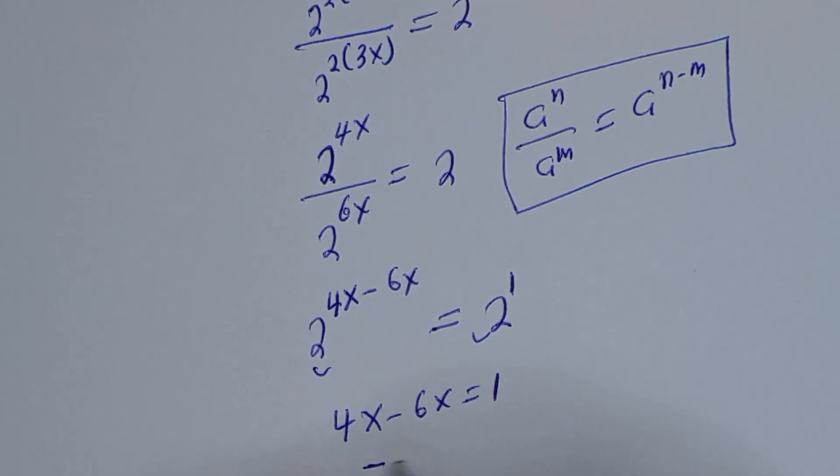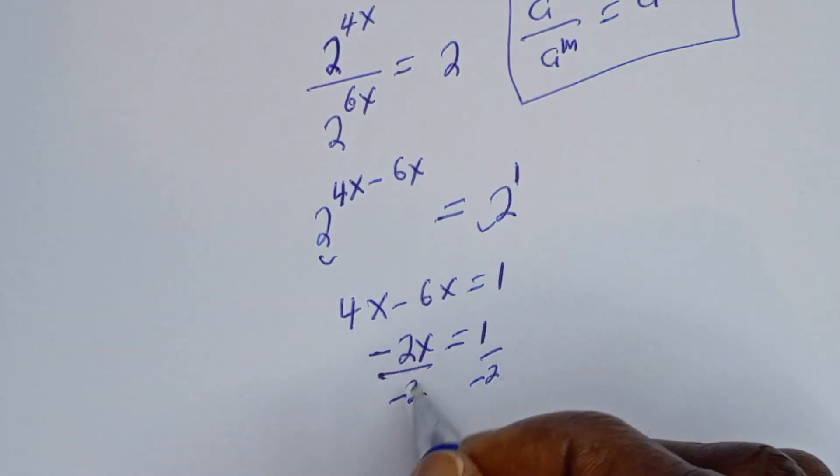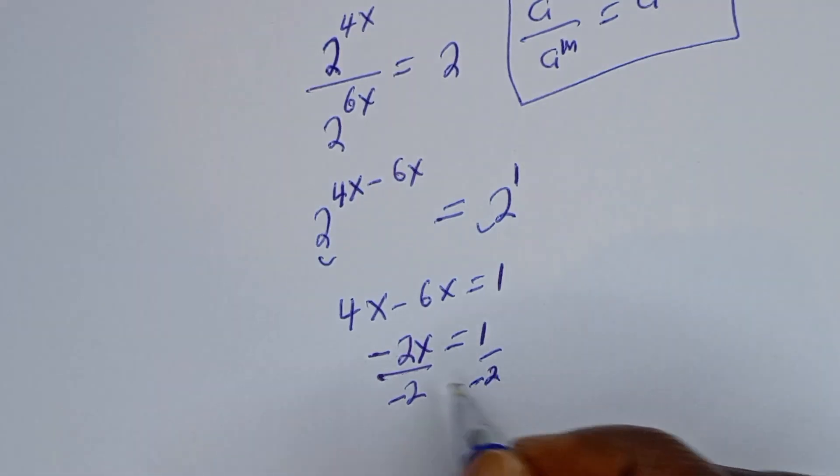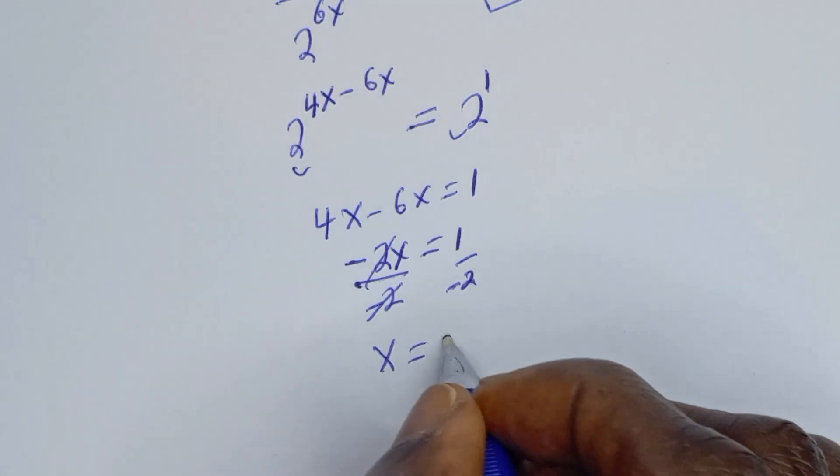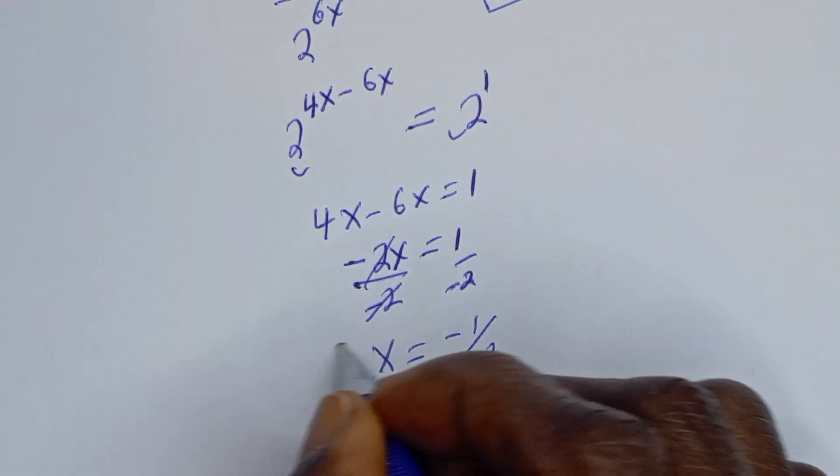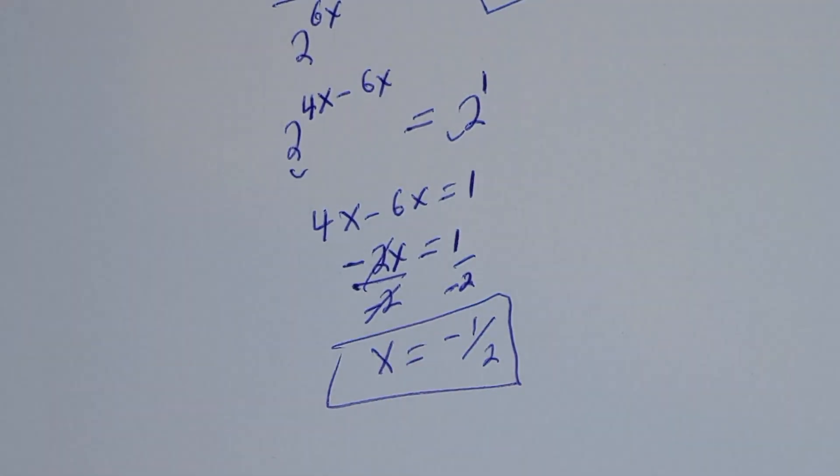4x minus 6s is minus 2s equals 1. Dividing by minus 2 on both sides and canceling, s is equal to minus 1 over 2. This is the final answer.